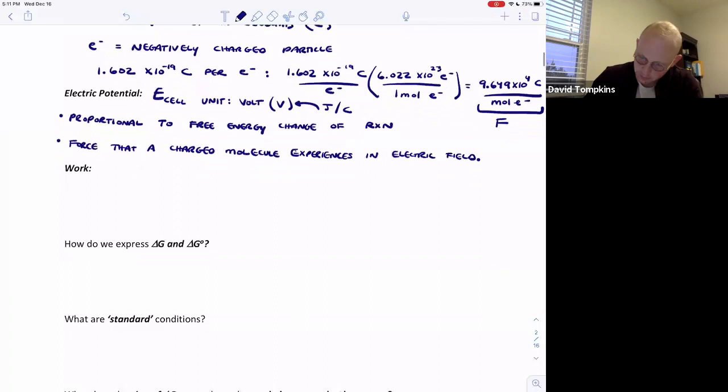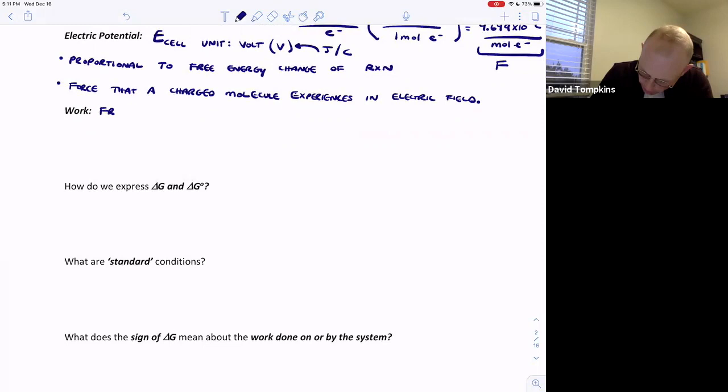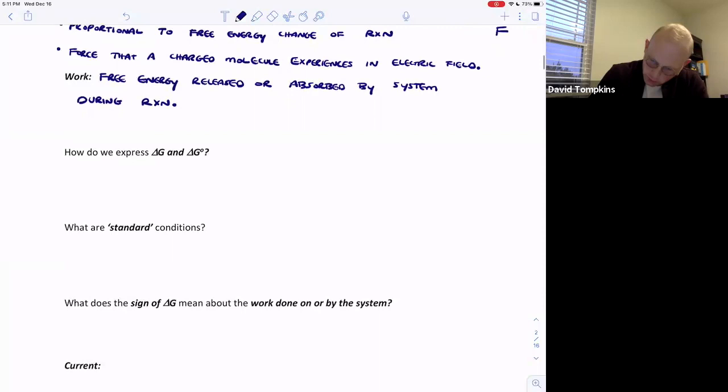So the work, this is the free energy that can either be released in the case of negative work or absorbed in the case of positive work by the system during an electrochemical reaction. We're going to relate this work here to delta G, the standard free energy change which is measured in joules or sometimes kilojoules per mole.